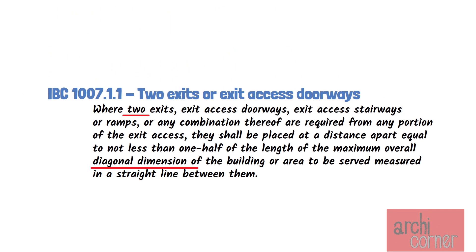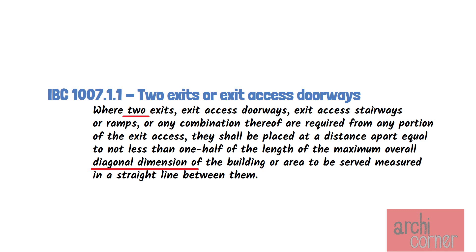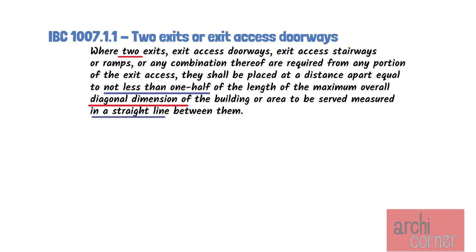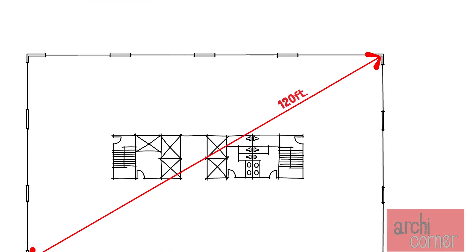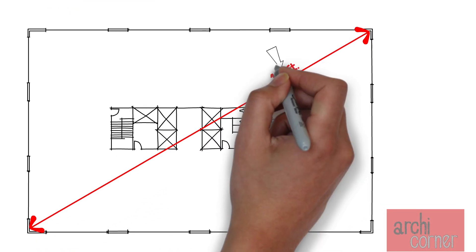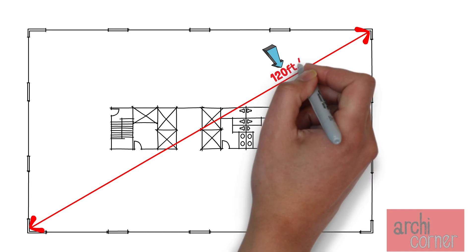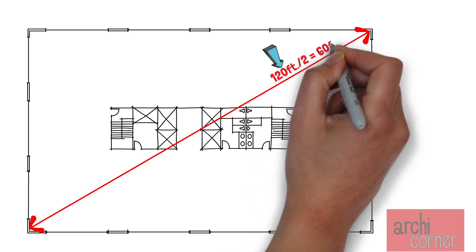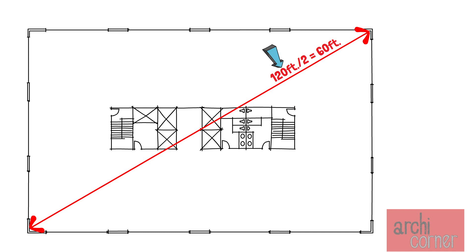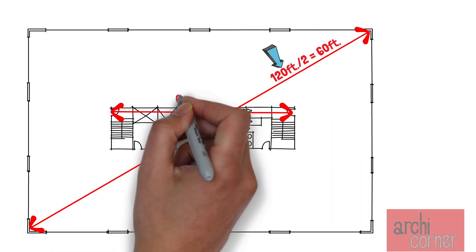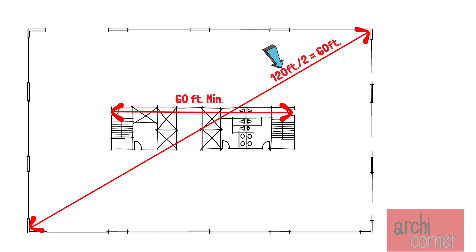Now let's go back and read the rest of the code. The distance between exits must not be less than one-half of the maximum diagonal dimension, measured in a straight line between them. In our example with 120 feet, if we divide that in two to get half, we get 60 feet. Therefore, the distance between our stairwell doors must be a minimum of 60 feet apart.